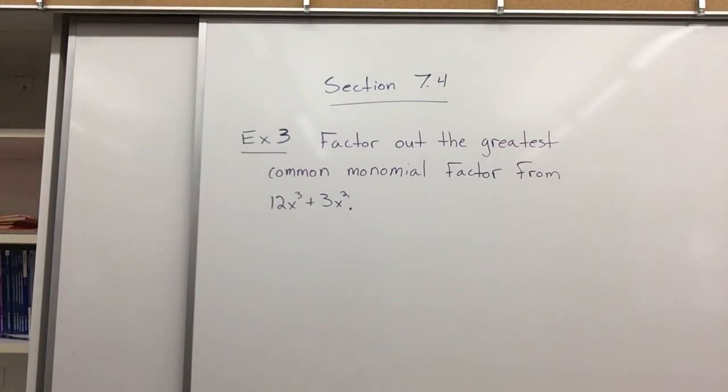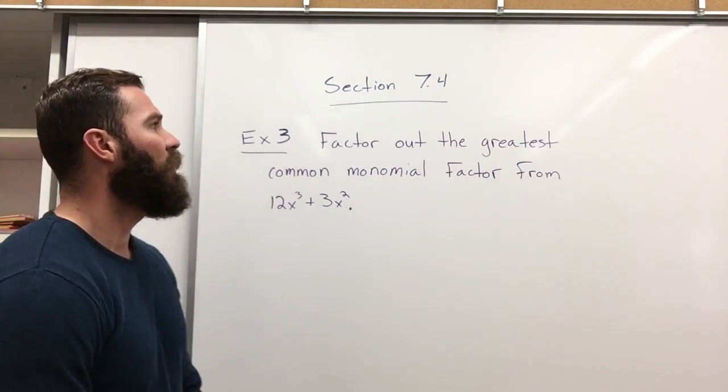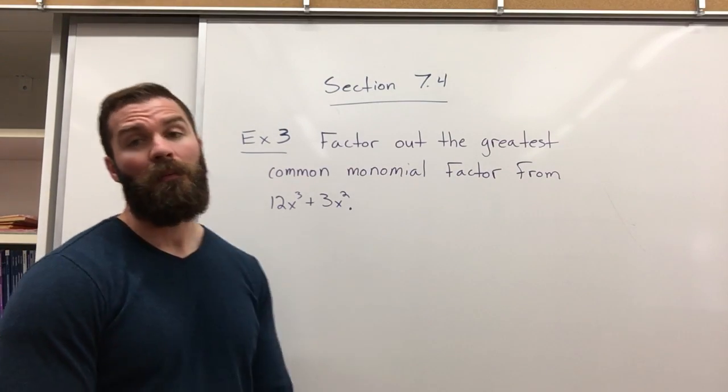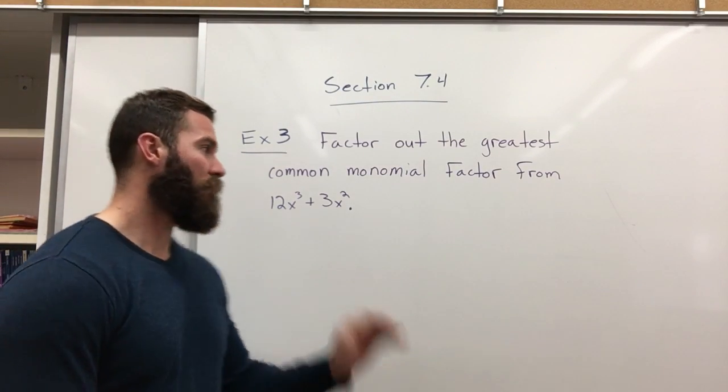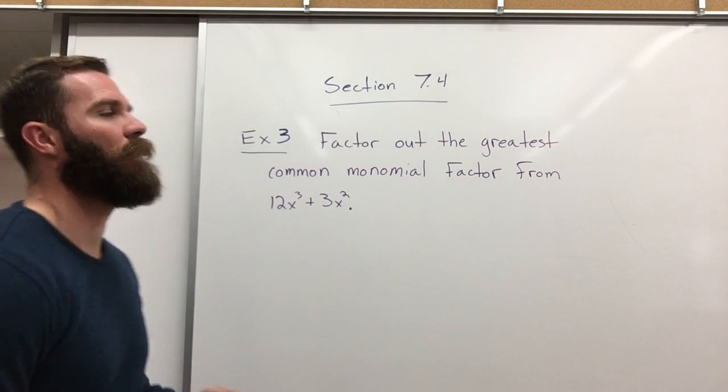Example 3 from section 7.4, factor out the greatest common monomial factor from 12x cubed plus 3x squared.